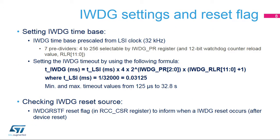The IWDG timebase is pre-scaled from the LSI clock at 32 kHz. The IWDG PR prescaler register can divide the LSI clock frequency by 4 up to 256. The watchdog counter reload value is a 12-bit value written in the IWDG RLR register. A formula can be used to determine the IWDG timeout, based on the LSI period, its prescaler, and the selected watchdog counter reload value. Given the parameter limits, the IWDG timeout value can be between 125 microseconds up to 32.8 seconds.